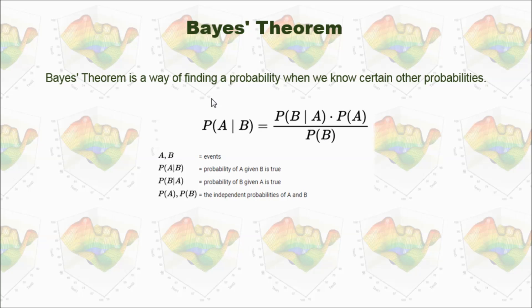So, with Bayes' theorem, we can write this formula: from probability of event B given A times independent probability of event A divided by probability of event B, we can calculate probability of A given B is true.